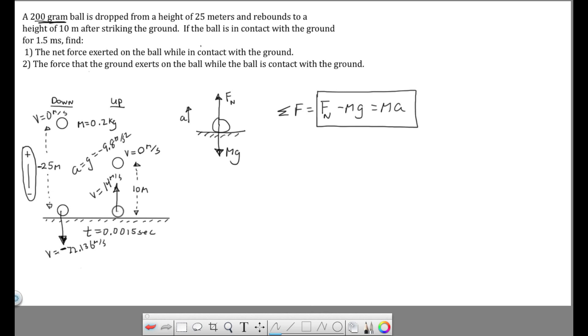So for the second question, we are asked to find the force that the ground exerts on the ball while the ball is in contact with the ground. And basically what they are asking for here is the normal force. The force of the ground on the ball is Fn. So what we have, in the first part, we set up our free body diagram. Normal force up, mg down, up is plus, down is minus. There is our sign convention. So when we sum the forces, we have normal force minus mg equal to ma. And we know what ma is. ma is the net force, which is what we solved for in the first part. And that answer was 4,818 newtons.